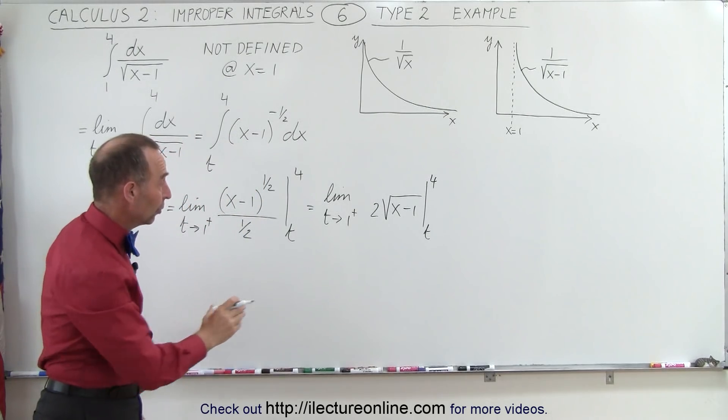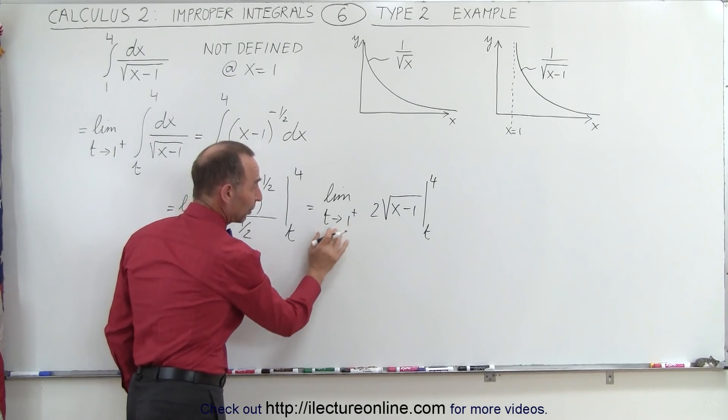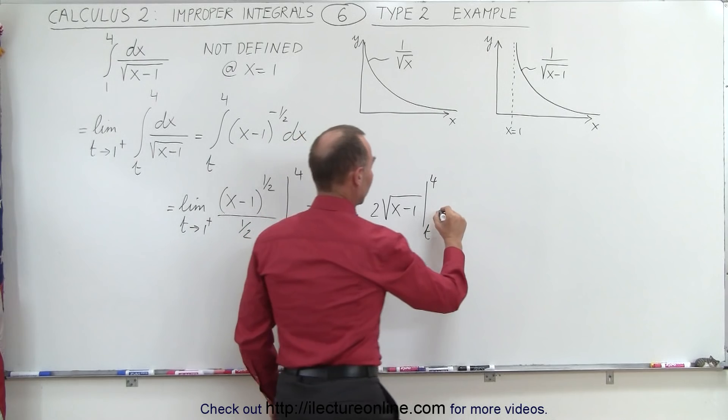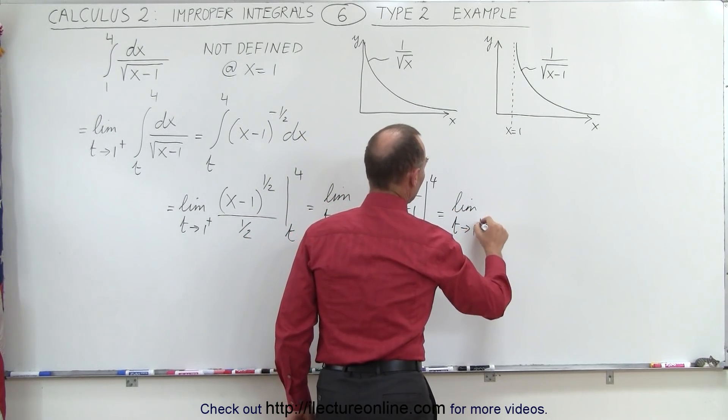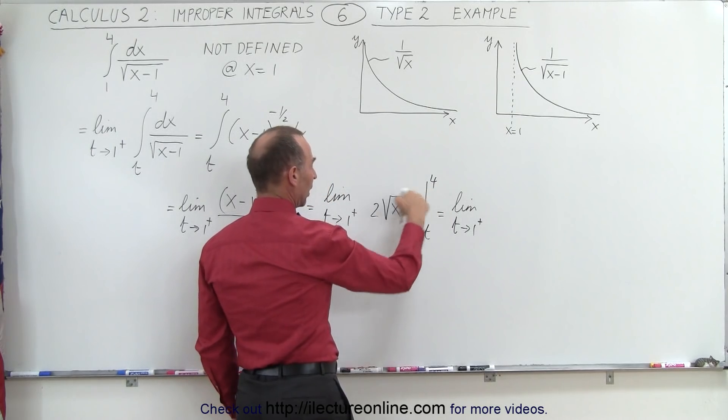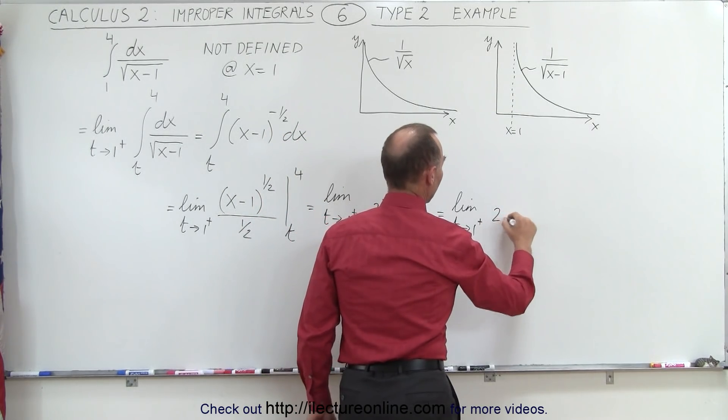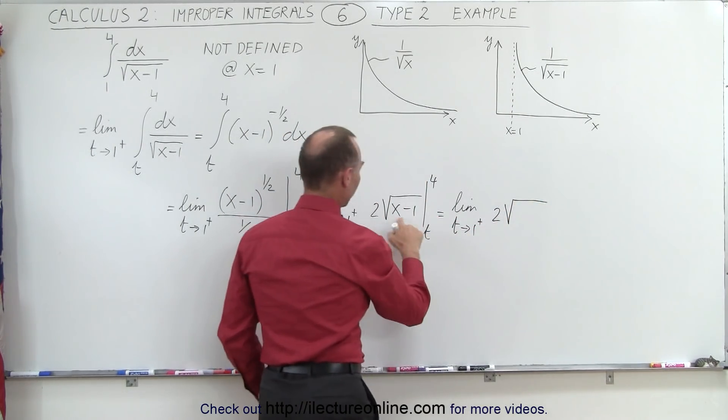And now we can go ahead and start plugging the limits. We still need to keep this because we haven't plugged in the limit yet. So this will be equal to the limit as t approaches 1 of, when we plug in the upper limit, we get 2 times the square root of 4 minus 1,